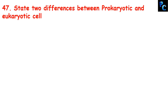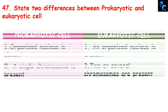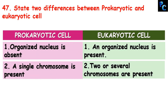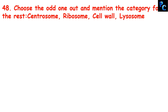Question 47: state the differences between prokaryotic and eukaryotic cells. In prokaryotic cells, an organized nucleus is absent; in eukaryotic cells, an organized nucleus is present. Prokaryotic cells have a single chromosome, while eukaryotic cells have two or several chromosomes.